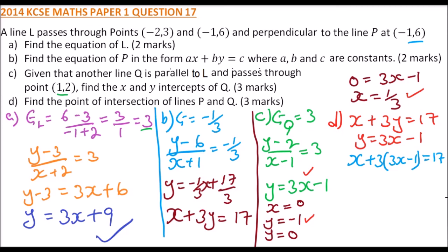Expanding gives x plus 9x minus 3 equals 17. Simplifying, 10x equals 20, so x equals 2. Substituting x equals 2 back in: y equals 3 times 2 minus 1 equals 6 minus 1, so y equals 5.